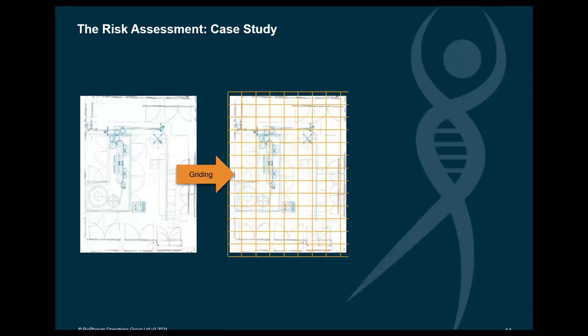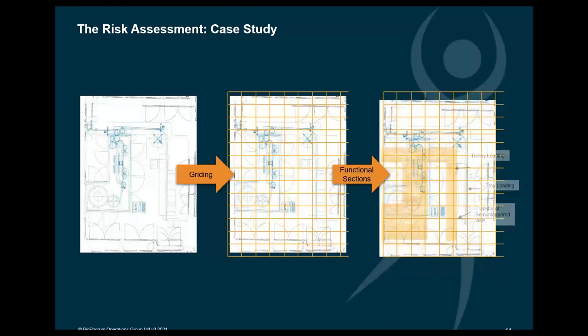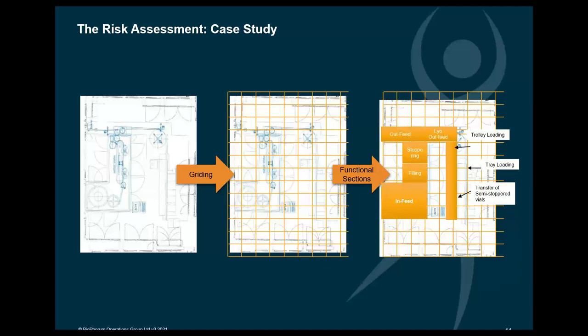The slide shows three layouts. On the left is the layout of the room in scope for assessment — a visual diagram. The middle diagram shows the grid overlay of the room layout. The third diagram shows grouping of grids into functional sections covering the operational process steps, highlighted in yellow showing the different functional sections.